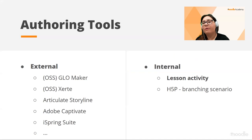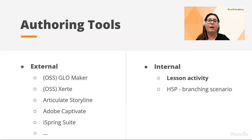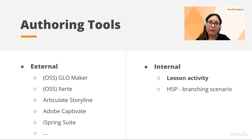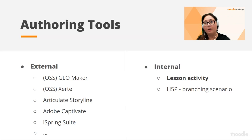Branching scenarios are usually created using specialized authoring tools. Some are open source software like GLO Maker and Zete, but there are also proprietary tools like Articulate Storyline, Adobe Captivate, and iSpring. These tools are used independently of Moodle but can export branching scenarios as SCORM packages for upload into Moodle. However, Moodle has its own internal tools: the lesson activity and the H5P branching scenario.